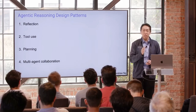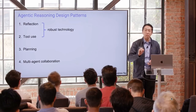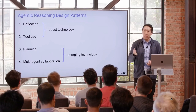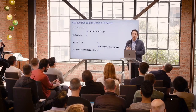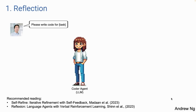Reflection is a tool that I think many of us should just use — it just works. I think of these as pretty robust technologies; when I use them, I can almost always get them to work well. Planning and multi-agent collaboration are more emerging — sometimes my mind is blown by how well they work, but I don't feel I can always get them to work reliably. Let me walk through these four design patterns. So, reflection: let's say I ask a system to write code for a given task. Then we have a coder agent — just an LLM that you prompt to write code.